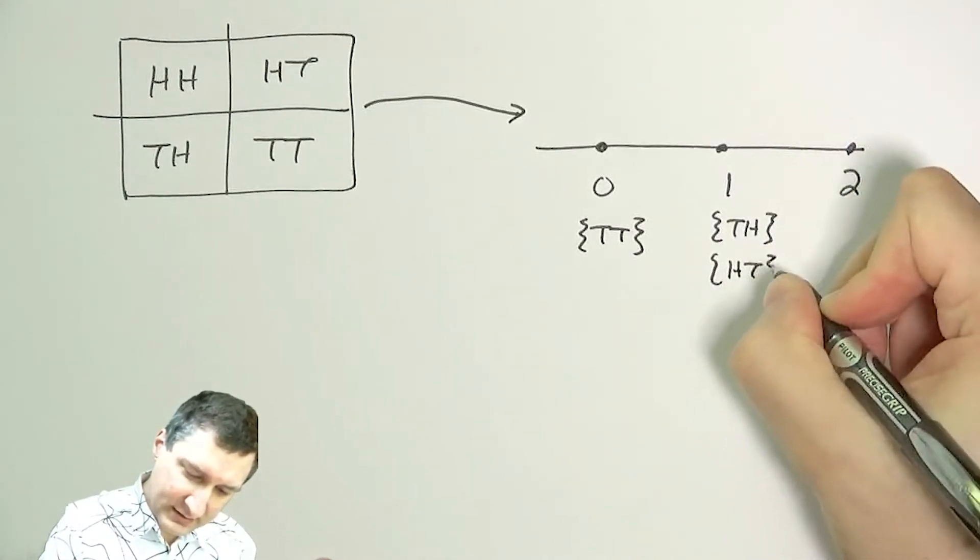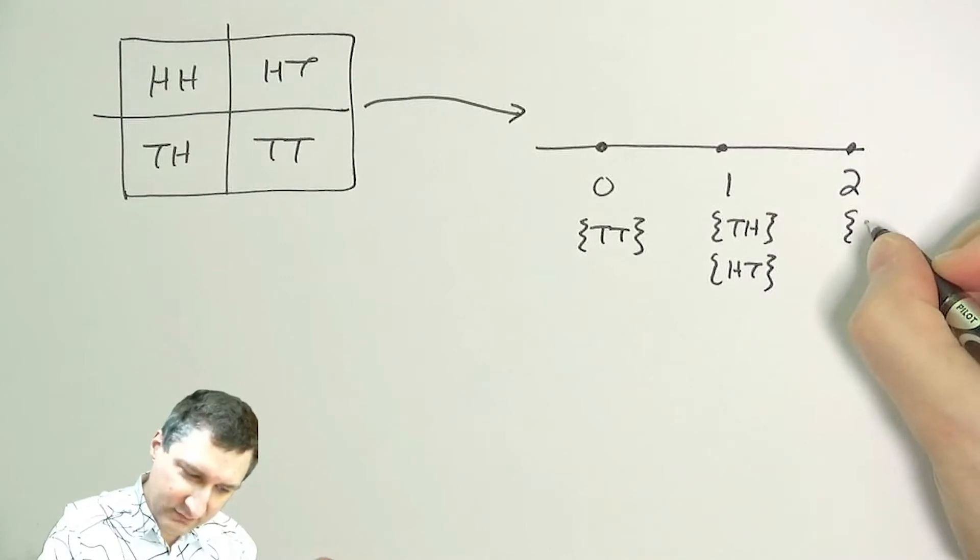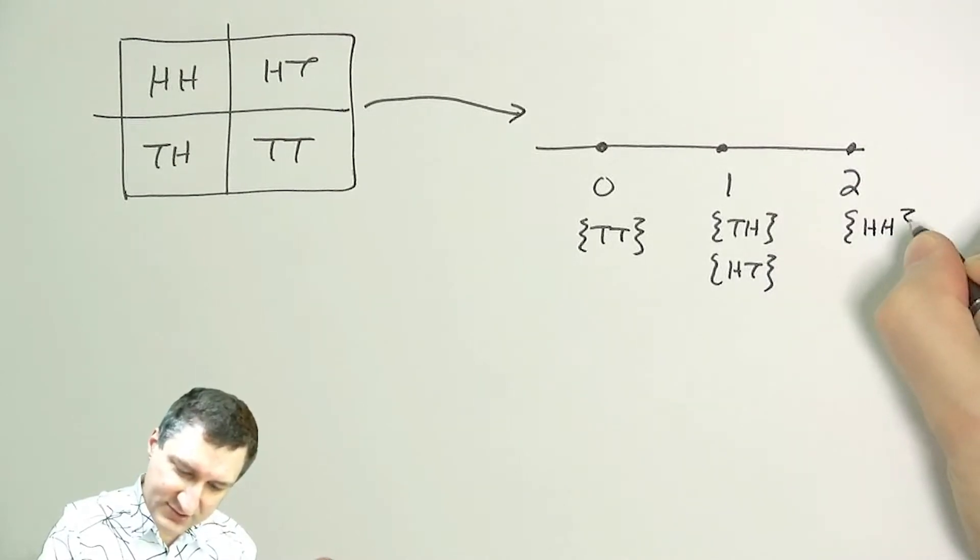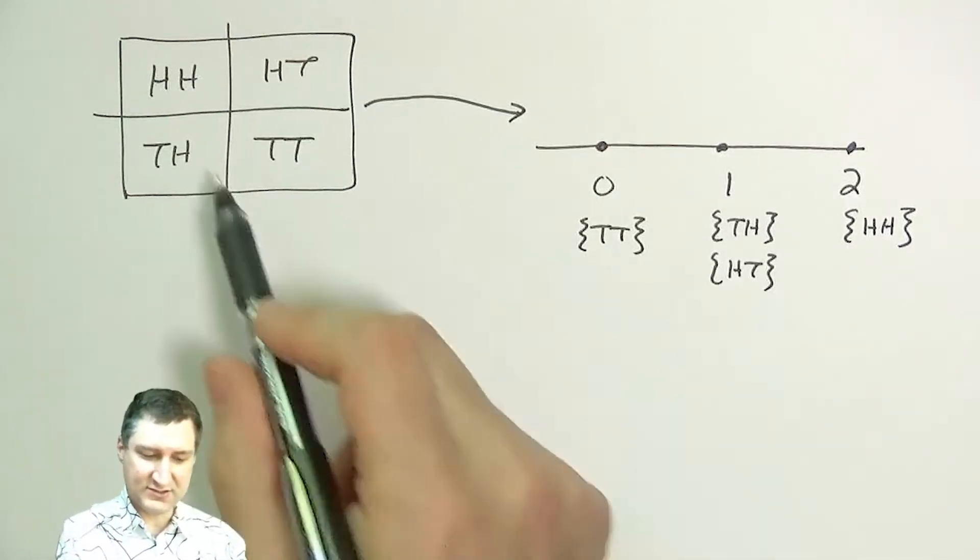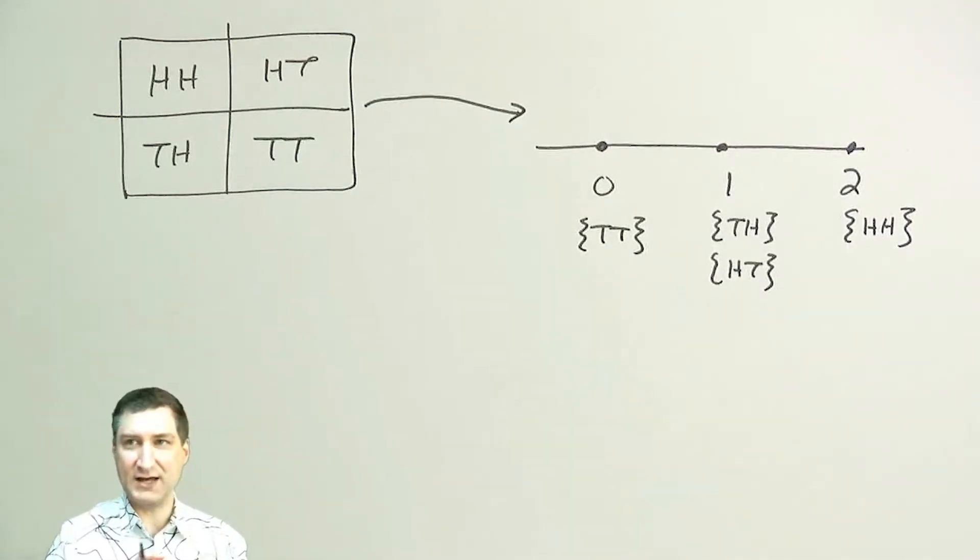In this case, I can see that the random variable values 0 and 2 correspond each to one outcome, and then two of these outcomes over here originally get mapped onto 1 in the random variable space.